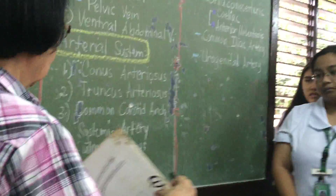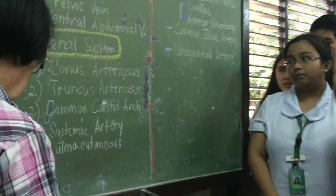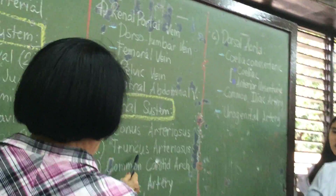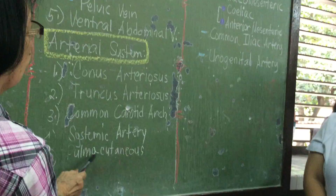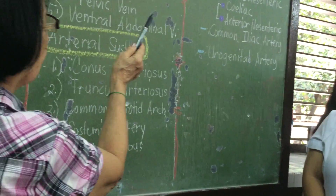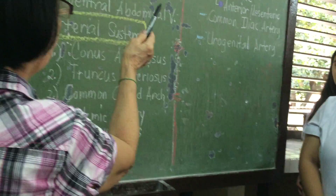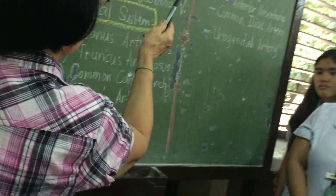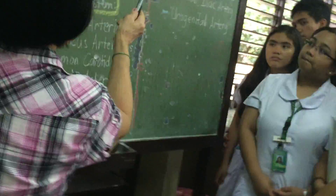More or less, what you have on the board for the arterial system — you are only going to study the conus, from the carotid, dorsal aorta — you are here. Siliapakus is very interesting.